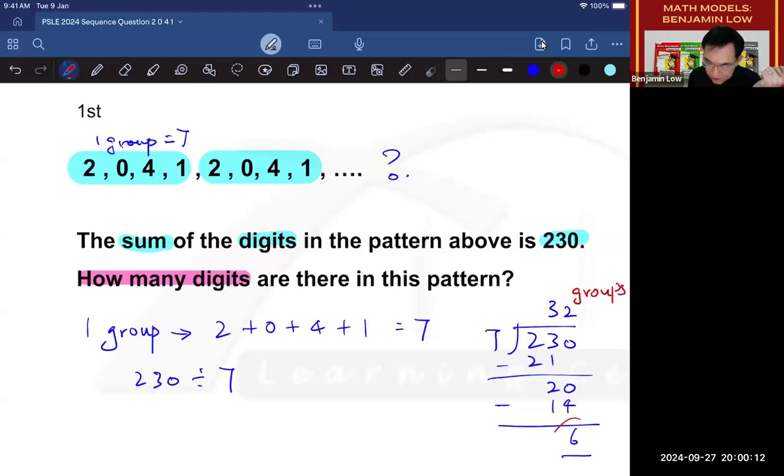This 32 on top represents the number of groups. And what is the 6? The 6 is the remaining value that is not in a group. It's not enough to complete a group because a group requires 7 and we only got 6. And this 6 that you are looking at actually belongs to a possible number 33 group, the 33rd group. So if there were to be 32 groups here, so if this is group 1, then in group 32, we will have 2, 0, 4, 1.